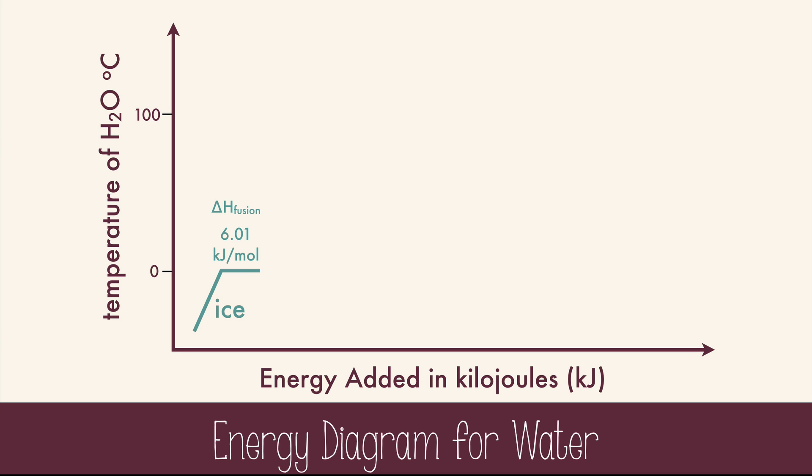Once all the ice is melted, the heat will raise the temperature of the water until it hits 100 degrees Celsius. This is the boiling point, or vaporization point, of water. Now it will take 40.7 kilojoules per mole of energy to turn the liquid into a vapor. This is the delta H of vaporization for water, and it's an endothermic process.